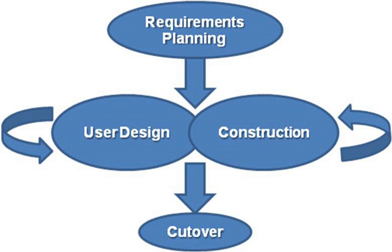Software prototyping is about creating prototypes, i.e. incomplete versions of the software program being developed. The basic principles are: prototyping is not a standalone complete development methodology, but rather an approach to try out particular features in the context of a full methodology such as incremental, spiral, or rapid application development. It attempts to reduce inherent project risk by breaking a project into smaller segments and providing more ease of change during the development process. The client is involved throughout the development process, which increases the likelihood of client acceptance of the final implementation. While some prototypes are developed with the expectation that they will be discarded, it is possible in some cases to evolve from prototype to working system. A basic understanding of the fundamental business problem is necessary to avoid solving the wrong problems, but this is true for all software methodologies.